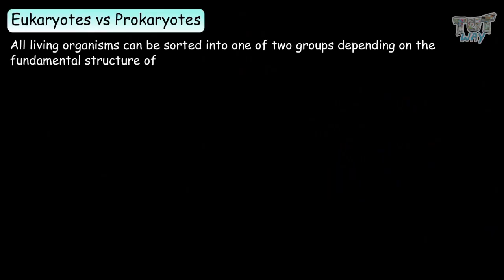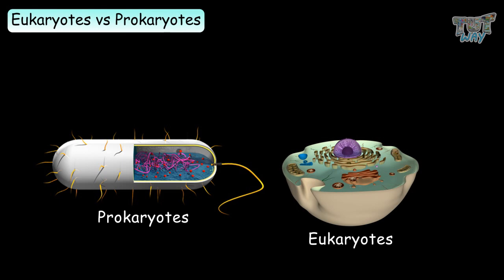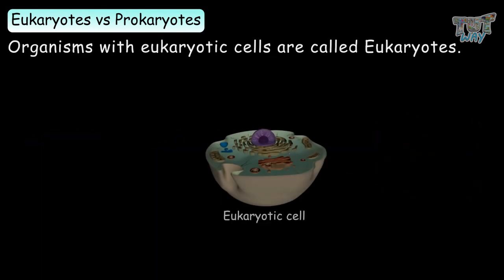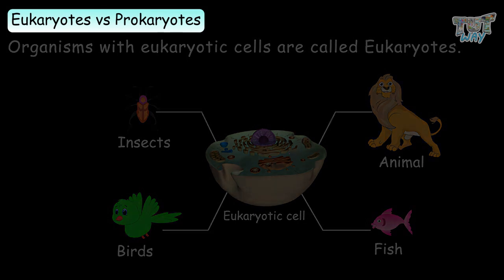All living organisms can be sorted into one of two groups depending on the fundamental structure of their cells. These two groups are the prokaryotes and the eukaryotes. Organisms with prokaryotic cells are called prokaryotes, and organisms with eukaryotic cells are called eukaryotes.